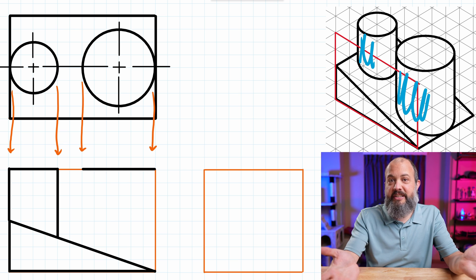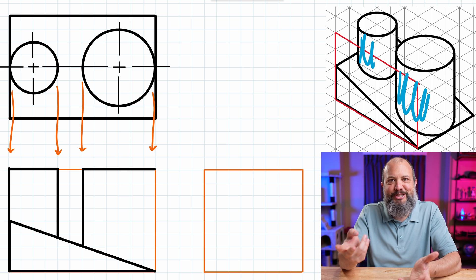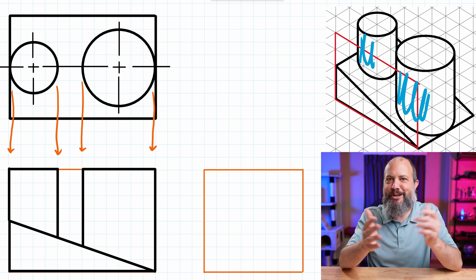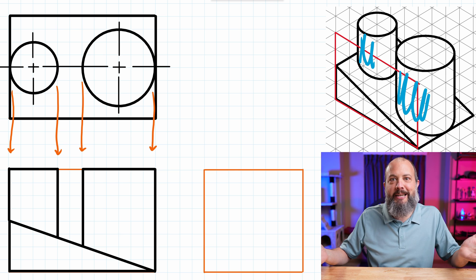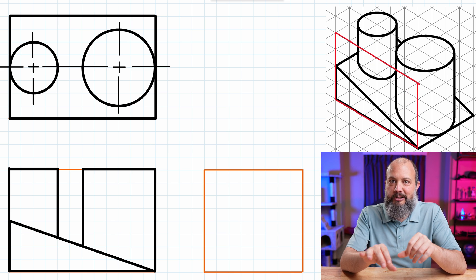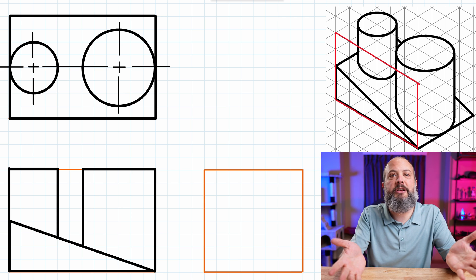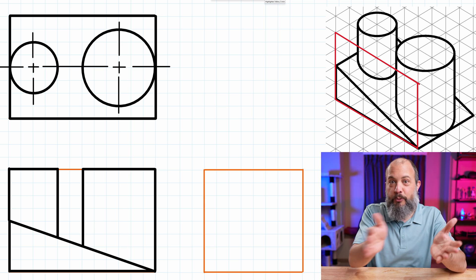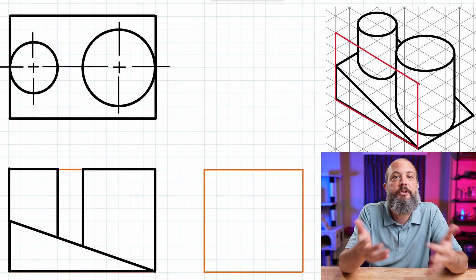So nothing hidden on this view. There's only three things. It's two cylinders and a triangular wedge. So there's nothing behind anything else. No hidden lines. So I wrap this up by drawing a center line. On the circular view, a center line looks like a plus, like a cross, in order to identify both left, right, and up, down, where the center of the circle is.